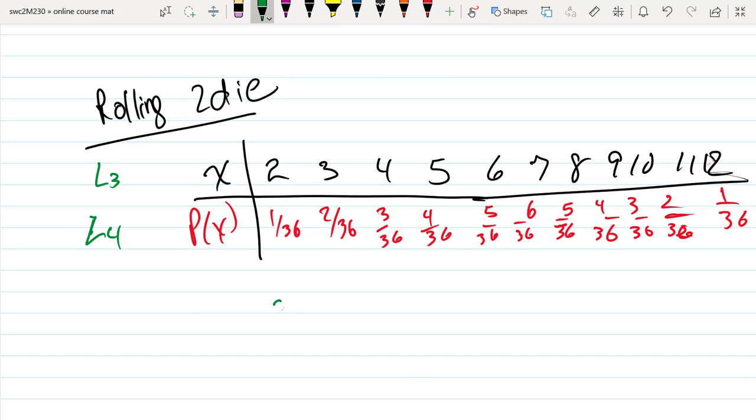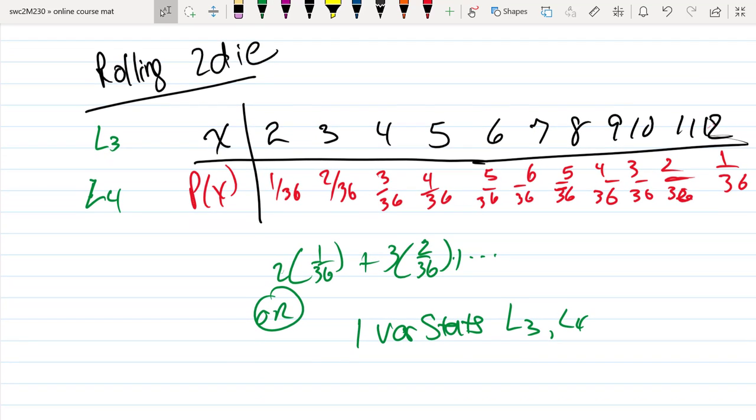I could manually do this with a two times 1/36 plus a three times 2/36 and so forth. The other way of doing that is just to use one-var stats, list three, list four. And if you do that, you'll find that the most common value is also the expected value.